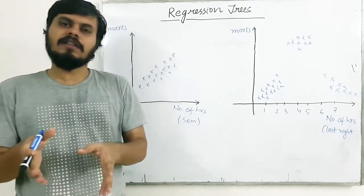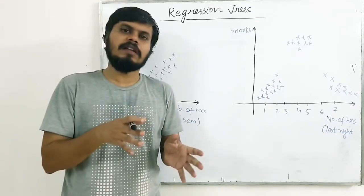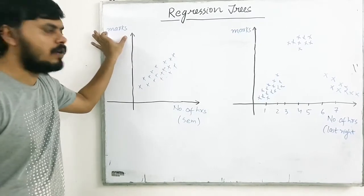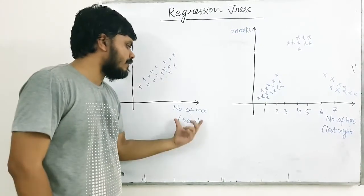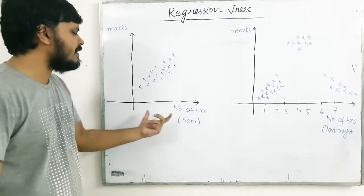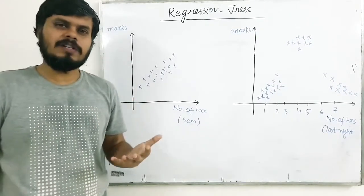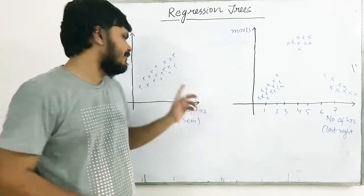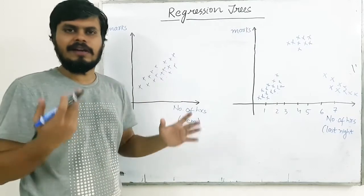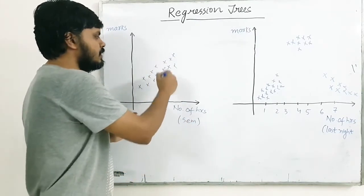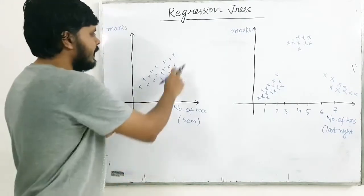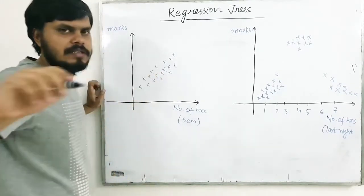I've taken an example about students — their marks in an exam versus how many hours they studied in the entire semester. On the y-axis you have the marks, and on the x-axis you have number of hours of study. You can see there is a general trend: the more you study, the higher the marks, roughly speaking. Each cross is a student.